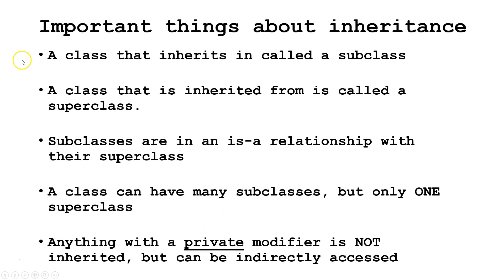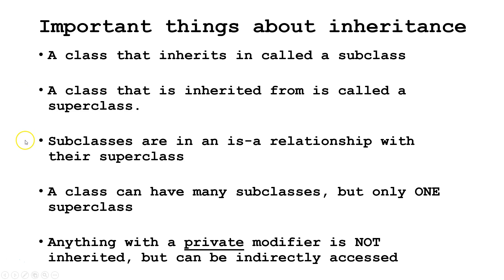Five important things to know for this lesson. First, a class that inherits is called a subclass. Second, a class that is inherited from is called a superclass. Third, subclasses are in an ISA relationship with their superclass — we will discuss this more later.